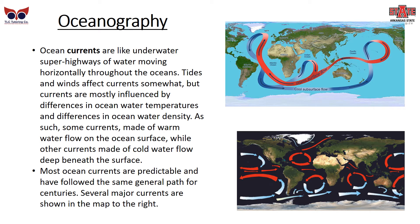Ocean currents are like underwater superhighways of water moving horizontally through the oceans. Tides and winds affect currents somewhat, but currents are mostly influenced by differences in ocean water temperatures and density. Some currents made of warm water flow on the ocean surface, while other currents made of cold water flow deep beneath the surface. Most ocean currents are predictable and have followed the same general path for centuries. Several major currents are shown in the map to the right.